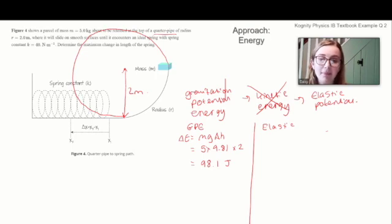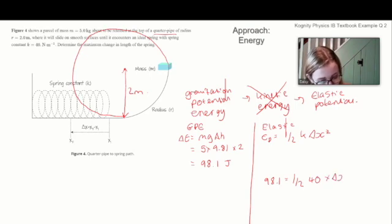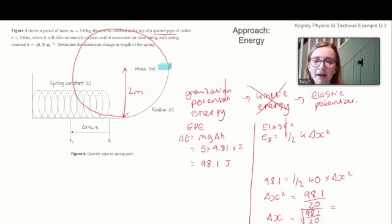All right, so then looking over to the right hand side of our page, when we're considering the elastic potential energy at the end, well according to the formula sheet, elastic potential energy is given by half K delta X squared. All right, so we know that these two energies have got to be the same, so we know that 98.1 has got to be half times K, which we're given in the question and we're told is 40 newtons per meter, and that's going to be times delta X squared. So delta X squared is going to be 98.1 divided by half times 40, half times 40 is 20, divided by 20. And therefore to get delta X, we just need to take the square root of that quantity. And if you put that into your calculator, you should get that the answer to the question is 2.2 meters.